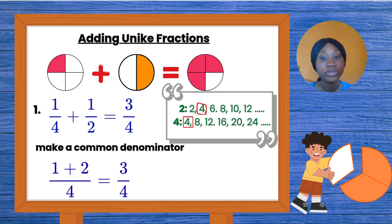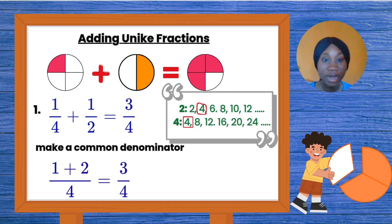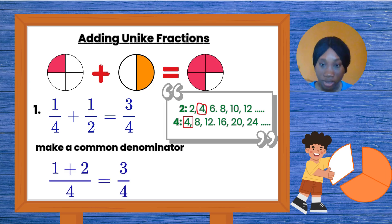By now we can add and subtract like fractions — just work out the top numbers, copy out the bottom, and simplify if you need to. Now let's move to unlike fractions. Unlike fractions are different from like fractions: unlike fractions have different numbers at the bottom.